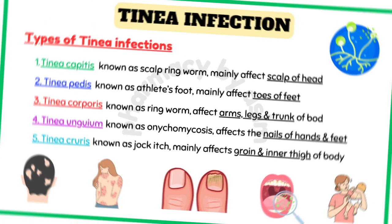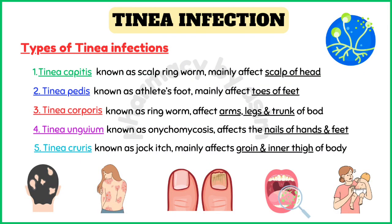Tinea infections can be divided into various types on the basis of the body parts they have affected. Tinea capitis, also known as scalp ringworm, mainly affects the scalp. Tinea pedis, also known as athlete's foot, mainly affects the toes. Tinea corporis, also known as ringworm, mainly affects the arms, legs, and trunk. Tinea onychomycosis, also known as nail fungus, mainly affects the nails of the hands and feet. Tinea cruris, also known as jock itch, mainly affects the groin and inner thigh.